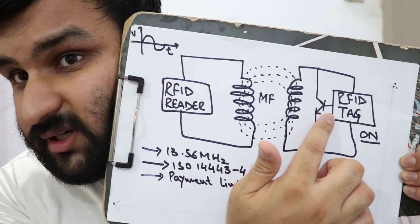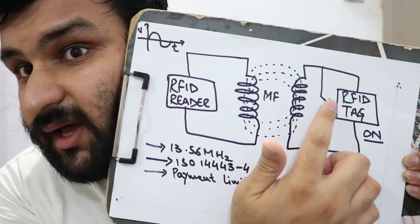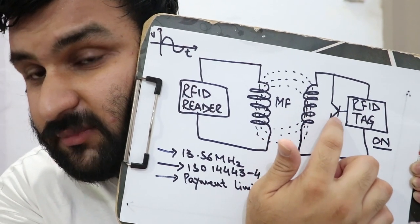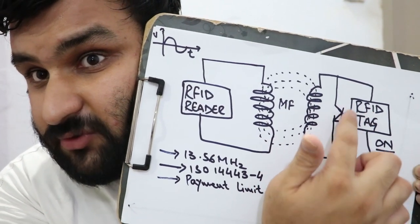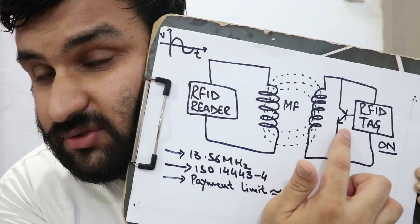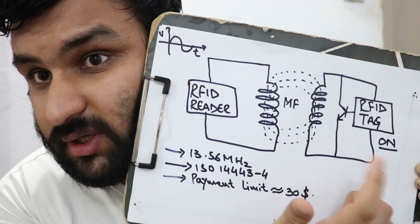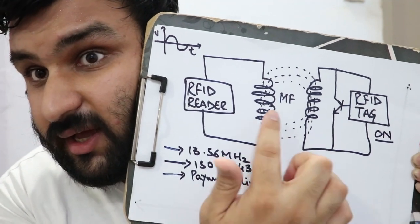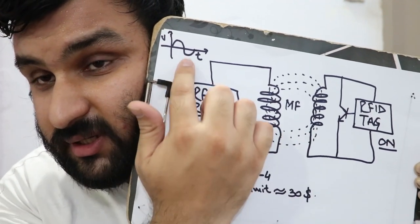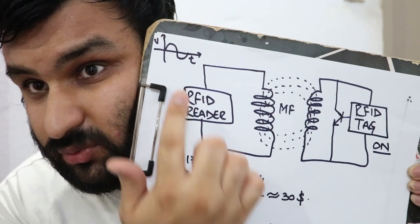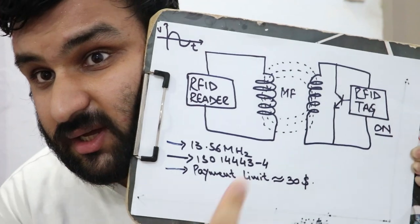The RFID tag is powered on and it has some information which uses the built-in BJT which fires the coil according to the data it wants to send. It basically damps this voltage, the reader voltage, and that's how they communicate. We're talking about passive tags.